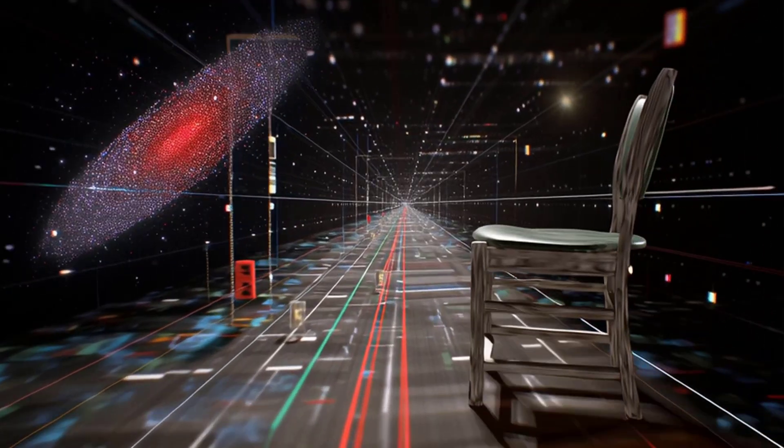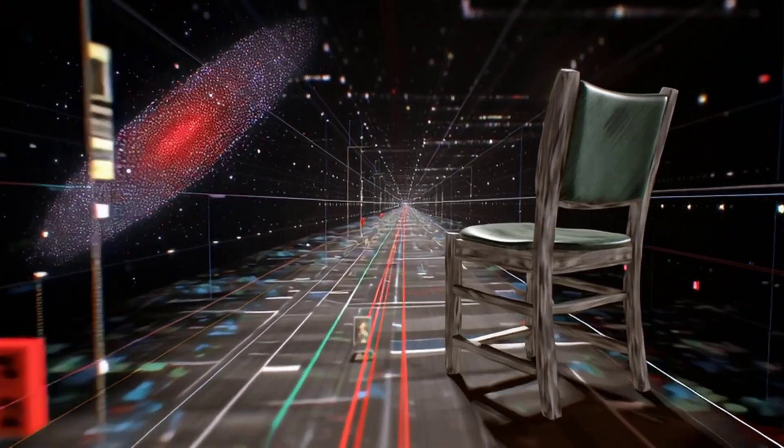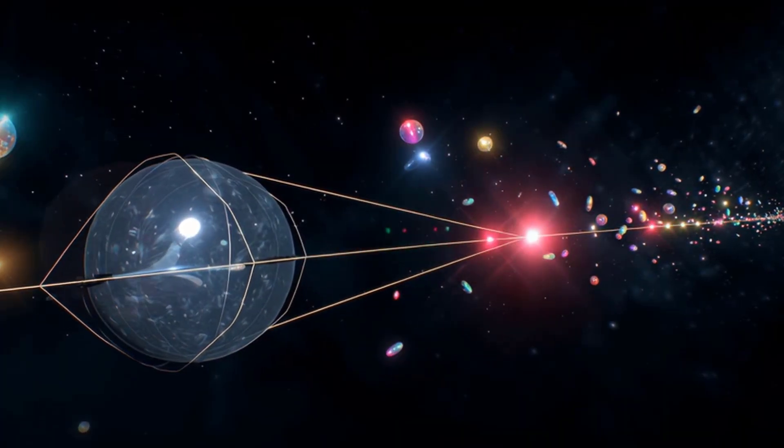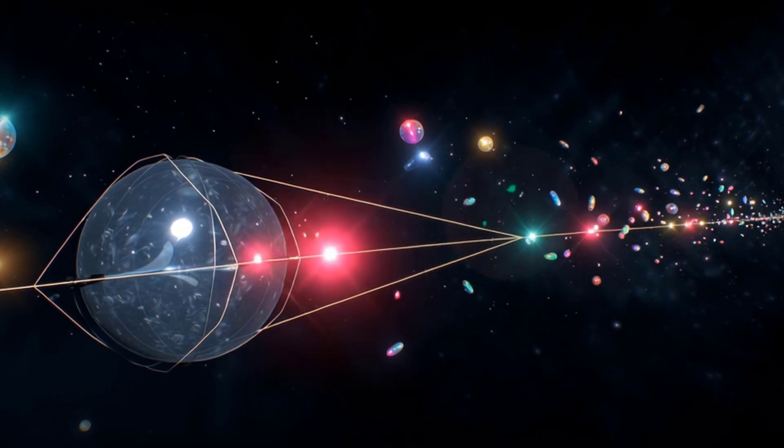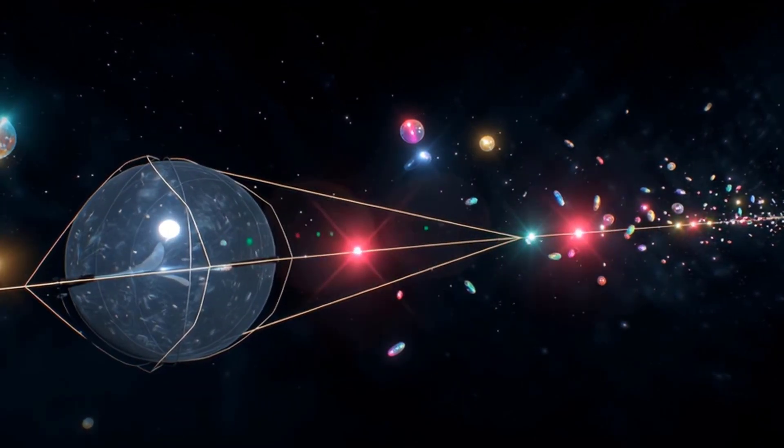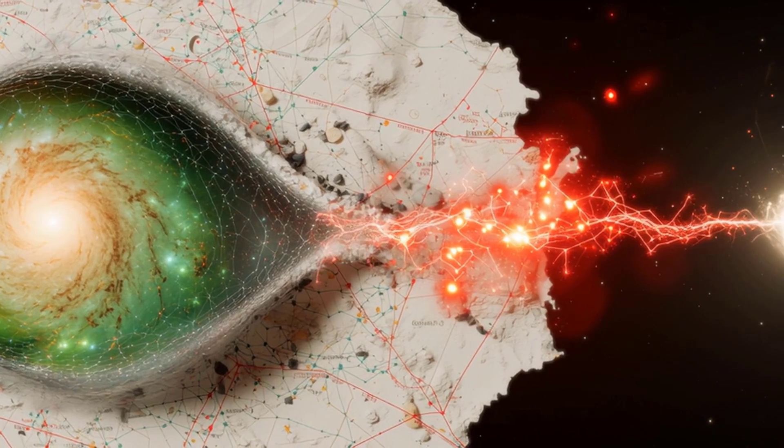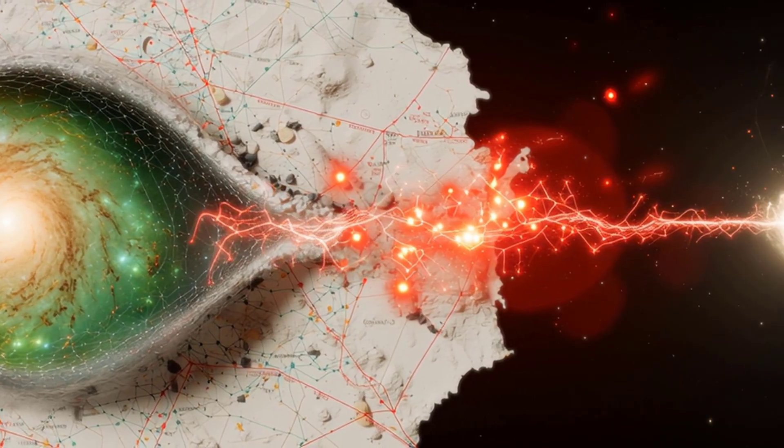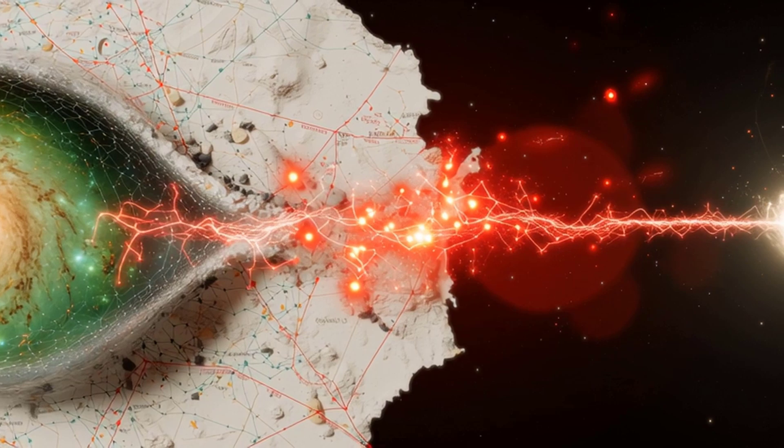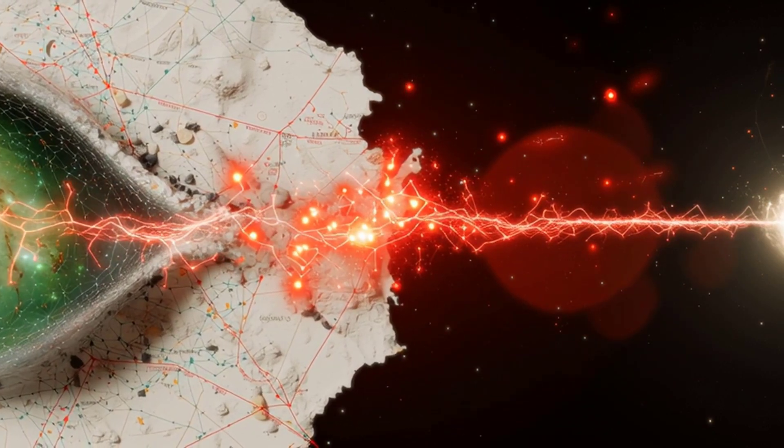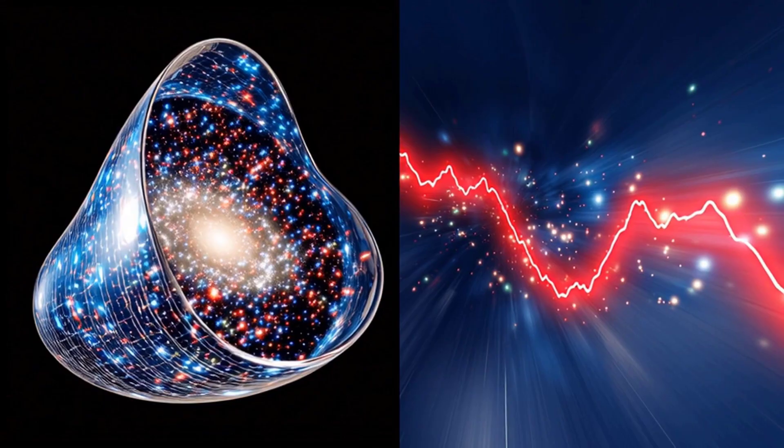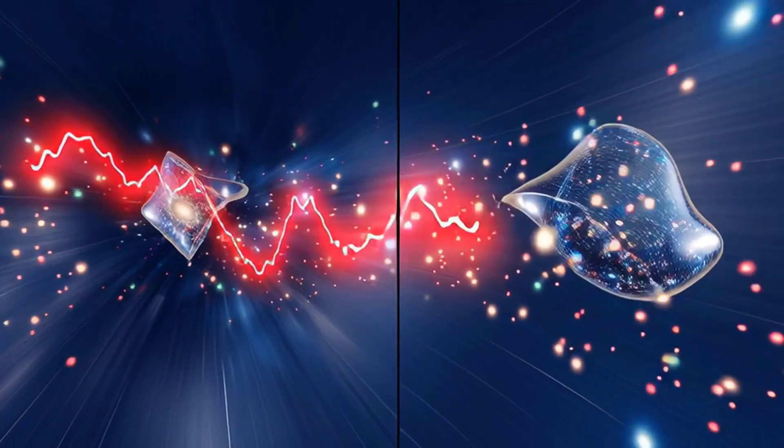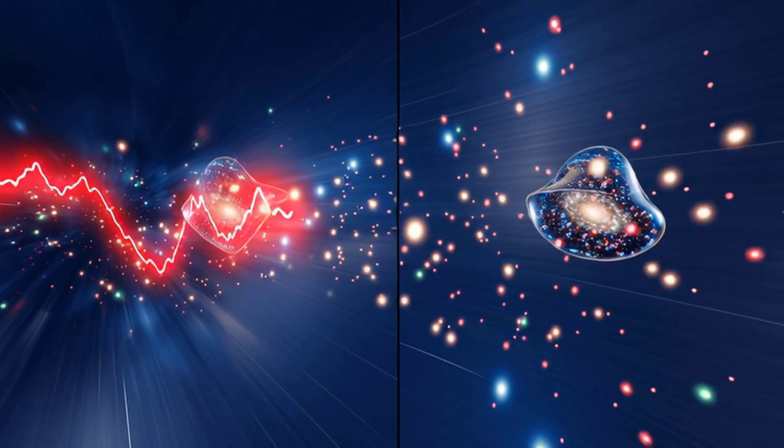One subtlety is that entanglement does not let us send signals faster than light. You cannot use it to send a message to a friend across the galaxy instantly. What it does mean is that nature itself is fundamentally correlated in a way that cannot be explained by local hidden variables. When you measure one particle, the outcomes are not predetermined separately. They are shared across the system as a whole. It is as if the two particles are not truly separate objects, but parts of a single non-local reality stretched across space.